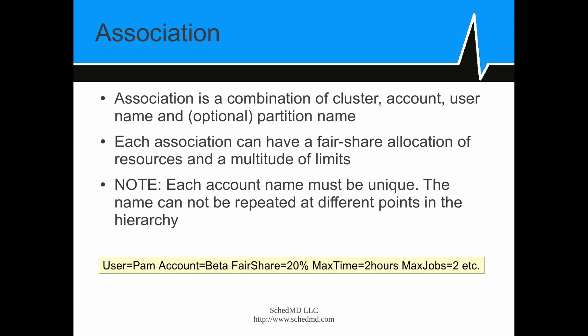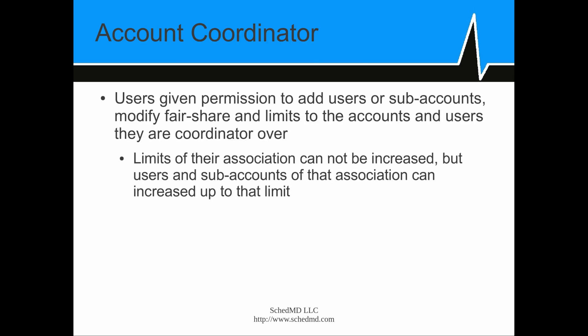There's an example of the contents of an association, where you've got a user, an account name, a fair share of the resources on the machine, time limit, maximum number of jobs, etc. Each account can have a coordinator — that's a user given special permission to add users, delete users, add subaccounts, and modify the limits and shares. A coordinator at a given level in the hierarchy has control over all the accounts from that point down. He can lower limits, but he can't increase them beyond what the limit is at his point in the hierarchy.